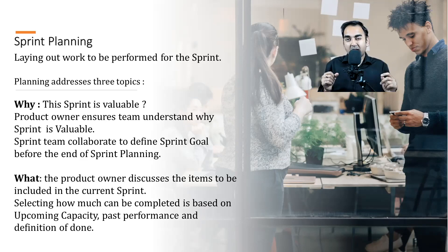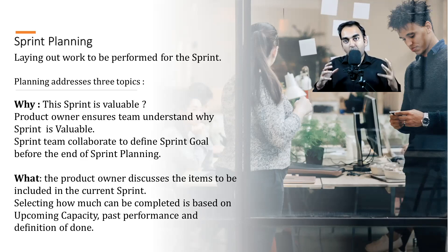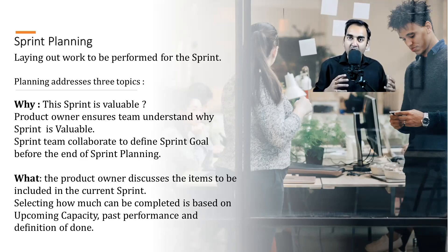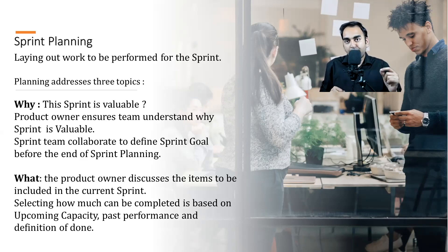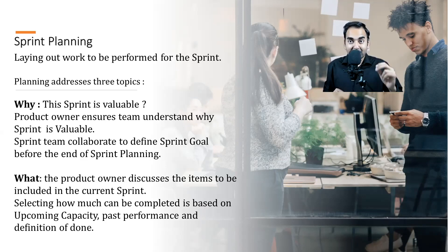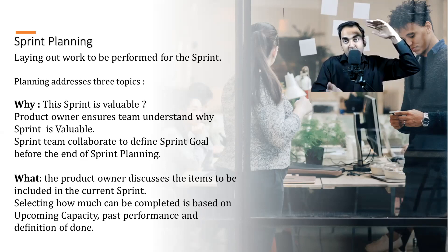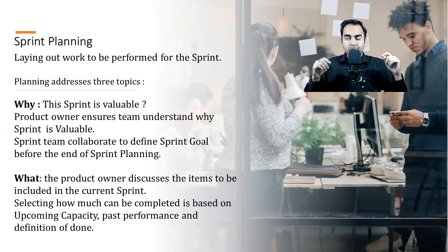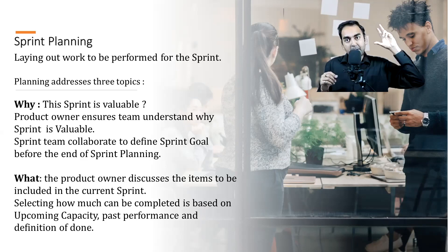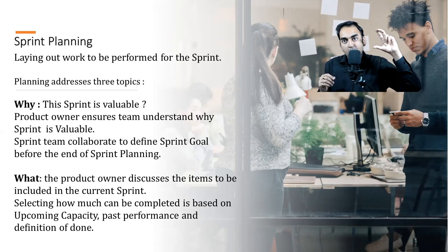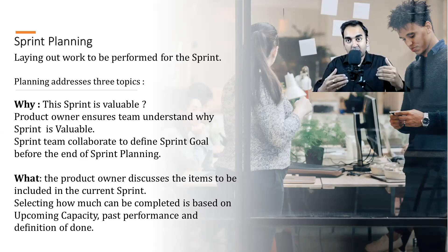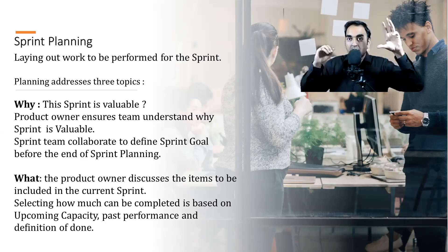Once the team understands why, the second aspect is what needs to be done. Suppose you want to build a banking app requiring 50 features — all 50 cannot be developed in one sprint. It's important for the product owner to decide which five or ten most important items the team needs to build right now. That's prioritization. This list is called the product backlog, and the product owner describes the top items and why they need to be done.